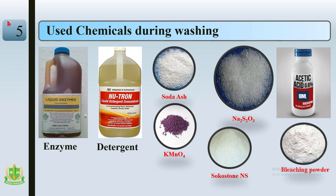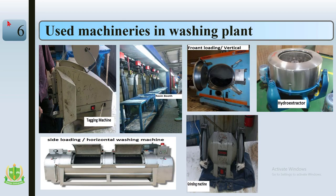Potassium permanganate is used in acid wash for color fade-out, and its most common use is PP spray to create a whitish effect. Sodium thiosulfate (hypo) reduces the chlorine effect. Acetic acid is used to reduce the alkaline medium of garments. Bleaching powder removes color from the garments.